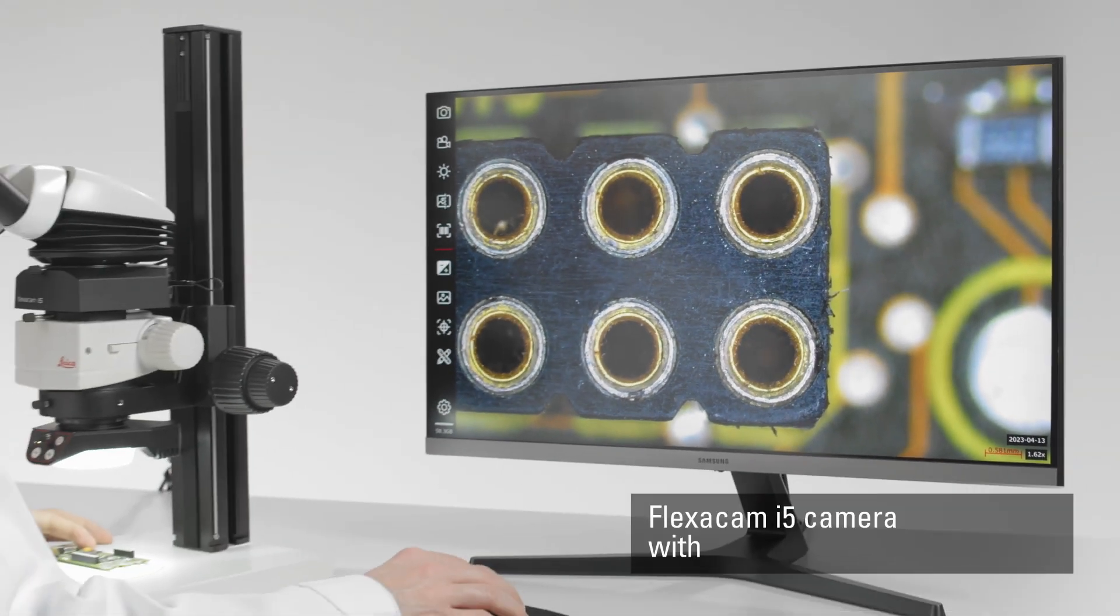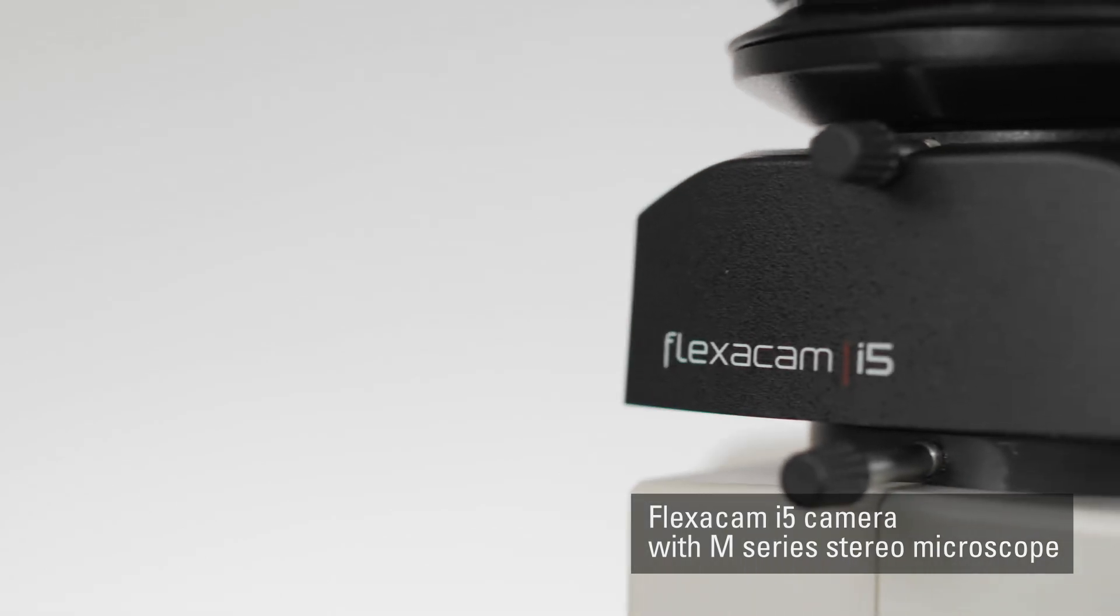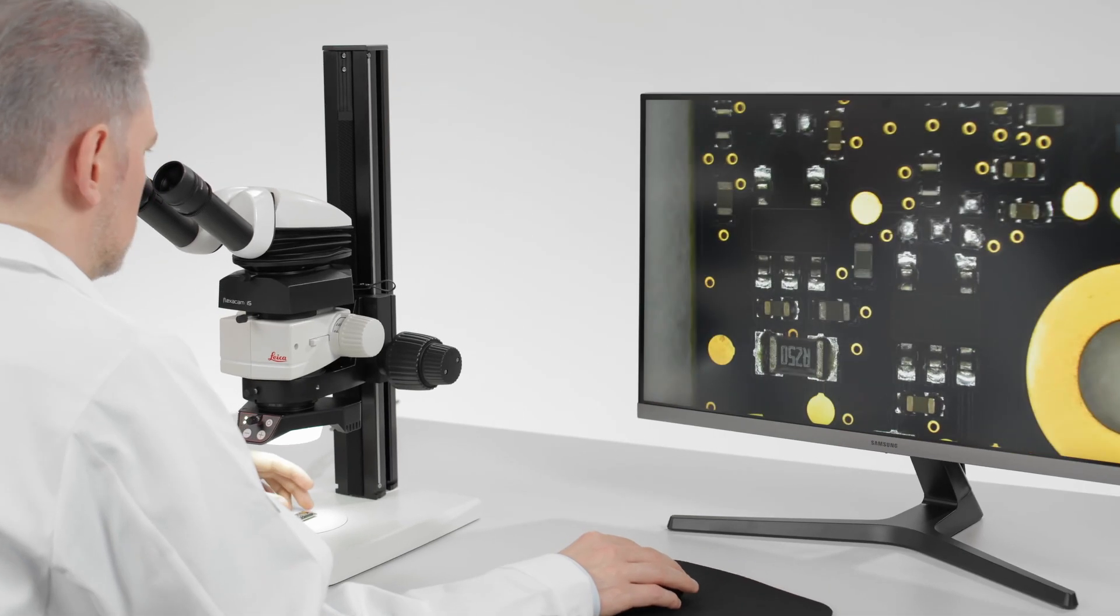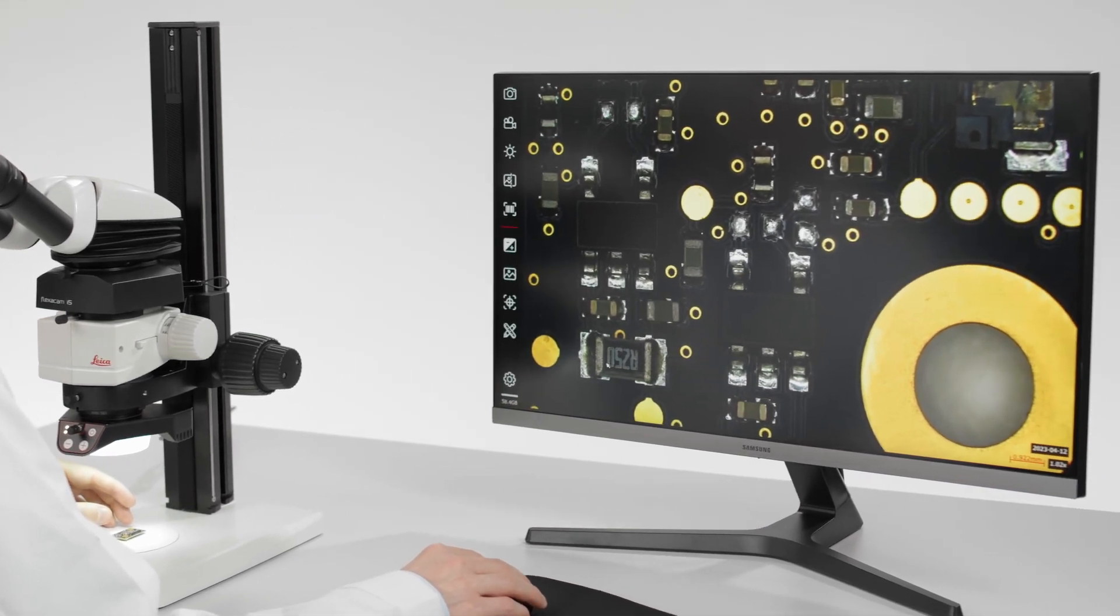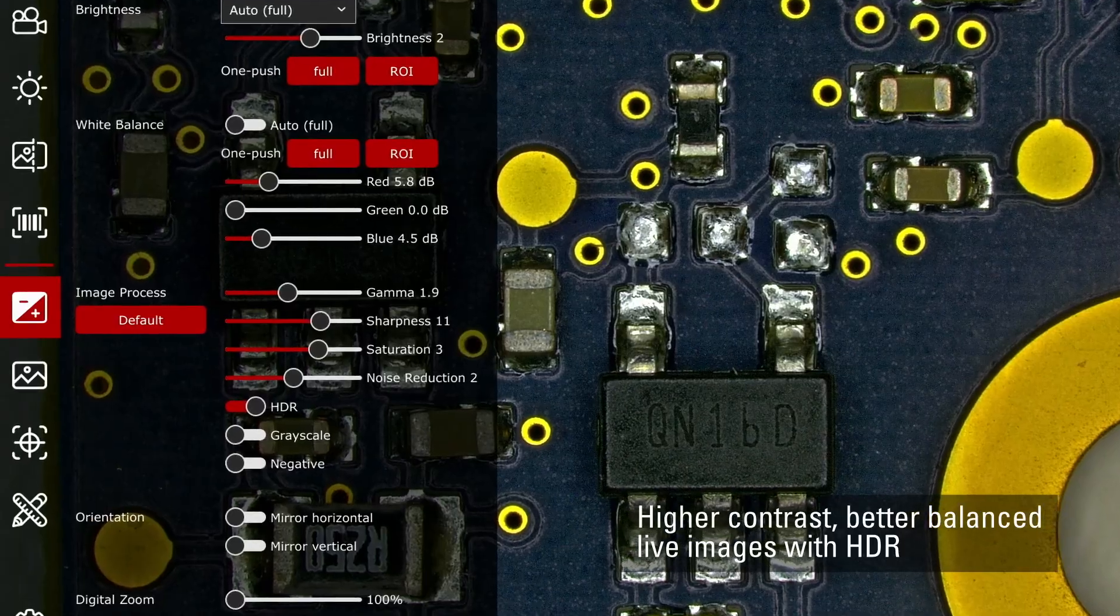The EnerSight software platform even adds measurement capabilities to the M-Series stereo microscopes. Higher contrast, better balanced imaging despite glare from reflective sample regions.